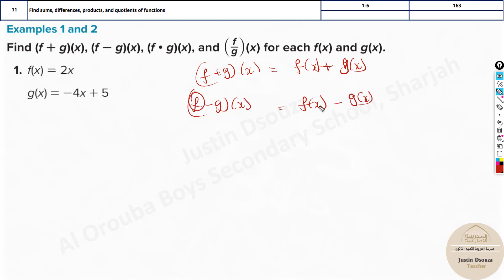Same thing with f dot of g of x means you're multiplying these two f of x multiplied with g of x. And lastly we have f by g of whole x. Now here this is f of x divided by g of x. This is it. This is how we understand these functions.